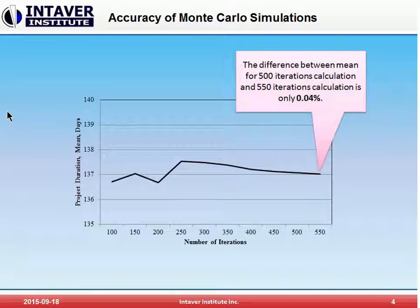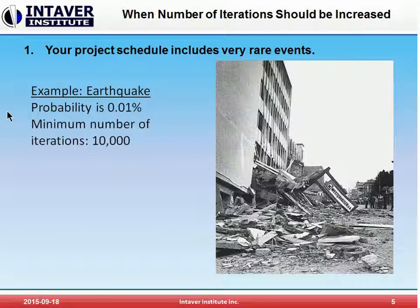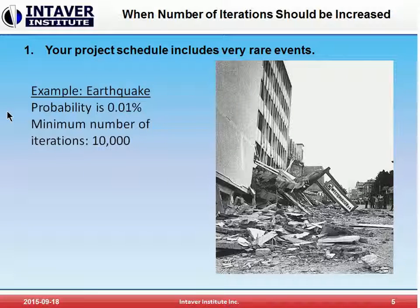Just in case you are wondering, there are two cases where you will need to do more iterations. The first is when you have very rare events that you would like to capture in your schedule risk analysis — for example, an earthquake with a probability of 0.01% per duration of the project. In this case, your number of iterations should be at least 10,000 to capture this rare event.